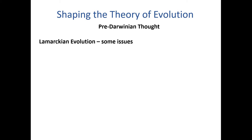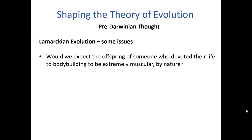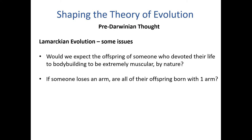There are some obvious issues with Lamarckian evolution. For example, would we expect the offspring of someone who devoted their life to bodybuilding to be extremely muscular just by nature? The bodybuilder has acquired these traits, so Lamarck would expect them to be passed on to offspring, but we know that isn't true. Similarly, if someone lost an arm during their life, by Lamarck's model, probably all of their offspring would be born with one arm — and we also know that not to be true. So Lamarckian evolution had some obvious issues that were basically corrected over time.